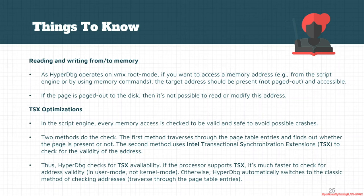There are also some optimizations in HyperDbg using Intel Transactional Synchronization Extensions (TSX). Before HyperDbg accesses memory, it checks whether the address is valid and safe. If the page is already paged out, HyperDbg won't access it, because doing so would result in a hypervisor halt or VM halt. HyperDbg first checks whether the address is valid, then tries to map the physical address to a kernel-valid address that is accessible by the HyperDbg process.